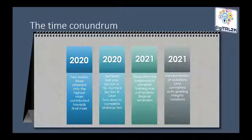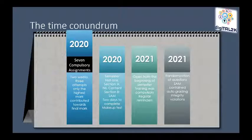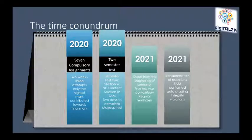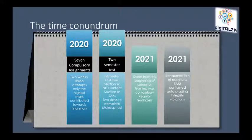The semester mark involved seven compulsory assignments in 2020. Each assignment was open for two weeks, allowing three attempts each, and only the highest mark was taken. The module included two semester tests which contributed 30% each towards the semester mark. In 2020, the continuous assessments were associated with deadlines, and students' engagement only peaked a few times through the year, usually the days before the assessment deadline.